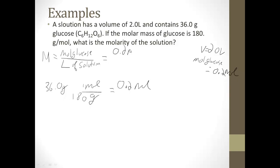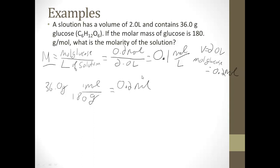So now we fill it all in: 0.2 moles divided by 2.0 liters gives us a molarity of 0.1 moles per liter. This is just a straight plug-and-chug — we just have to remember that we're putting in the moles of our solute, not the grams.